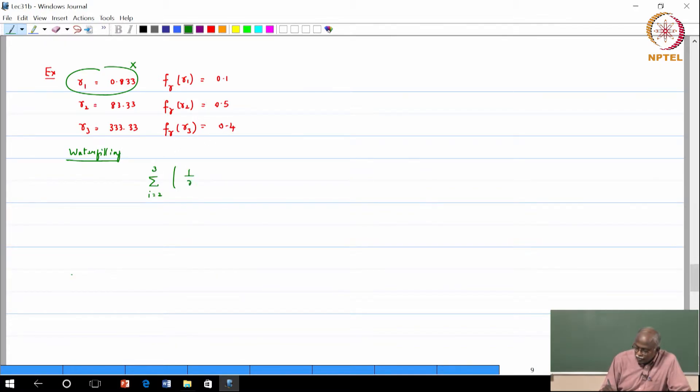1 over gamma 0 minus 1 over gamma i, F gamma of gamma i can we set it equal to 1. Gamma i is fixed, F of gamma is fixed, only thing that is variable is gamma 0. This is exactly what we need to find out because that is the water filling level. So water filling is coming into play by saying how do you do the power allocation.